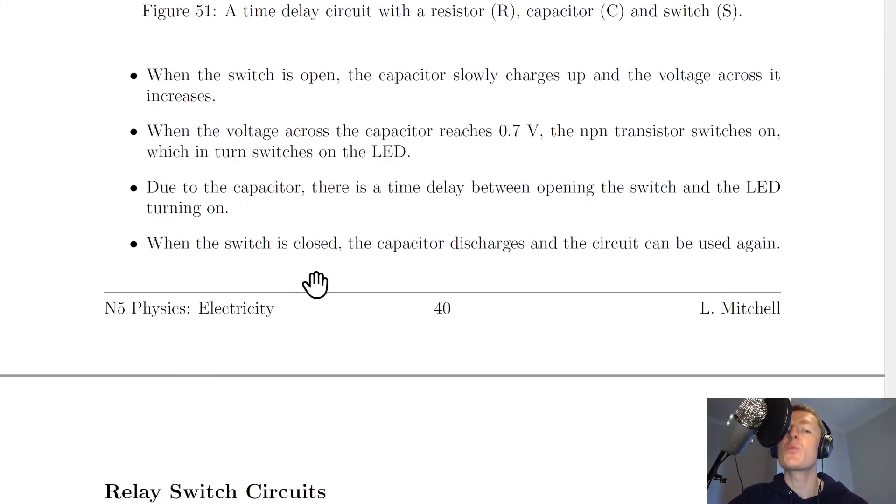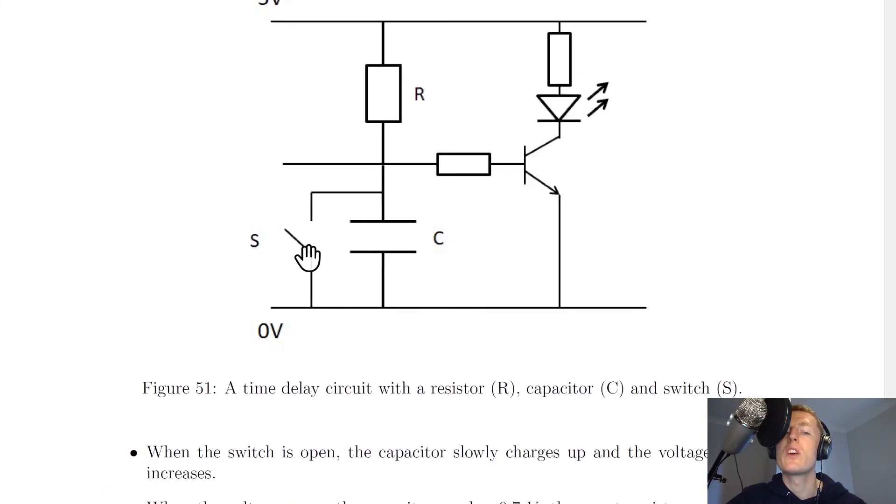Lastly, however, it says when the switch is closed, the capacitor discharges and the circuit can be used again. So when this switch is closed, this lets the current flowing along here flow back to ground. And it means that our volts across the capacitor will eventually decrease back to 0 volts.